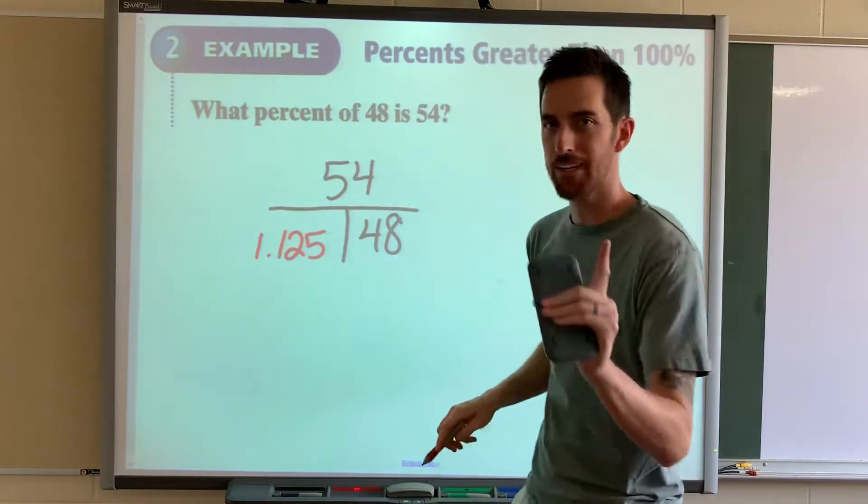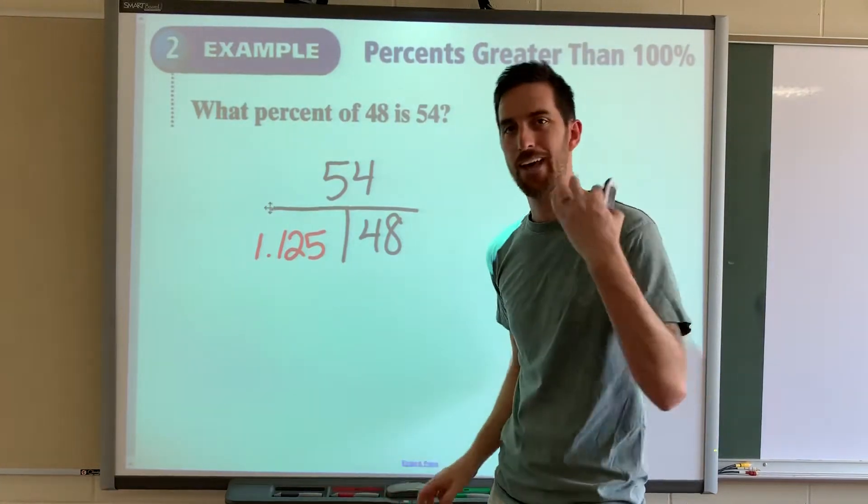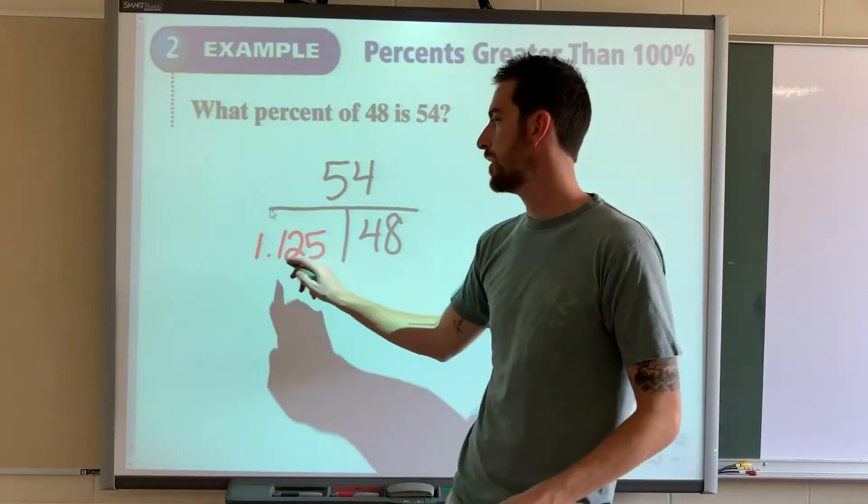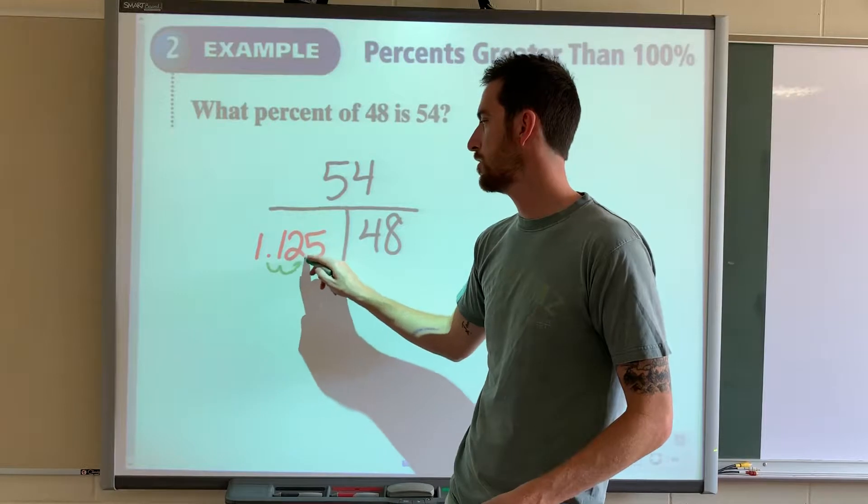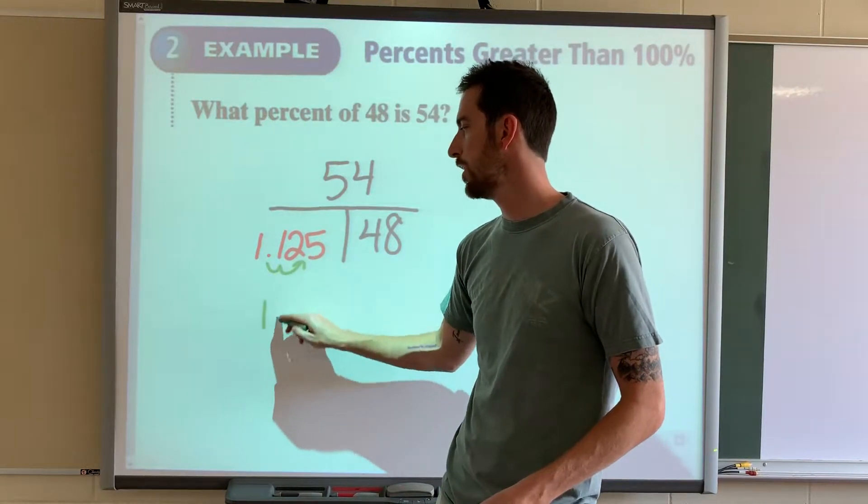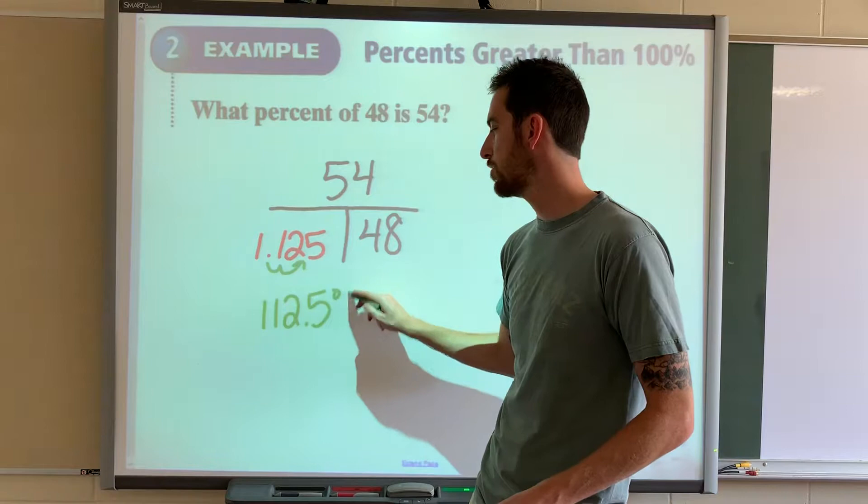But remember, we don't want it in decimal form. We want it as a percentage. So you scooch that decimal two places to the right and it becomes 112.5 percent.